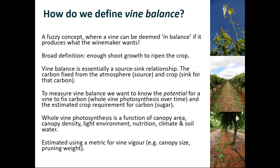At one extreme, a vineyard manager or winemaker can say a vine is in balance simply because it's giving them what they want for their product, and from the other it could be a very simple ratio measured in the field. A very broad definition is that a vine is in balance when it has enough shoot to ripen the crop.